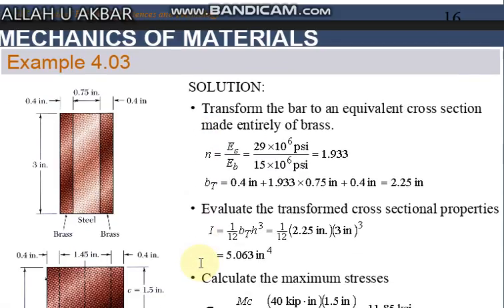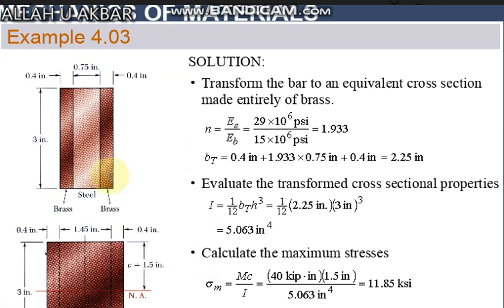Here is the structure shown with a moment like brass and steel. The steel is 0.75 inch while brass on two sides is attached with steel, 0.4 inch and 0.4 inch. And now first of all...